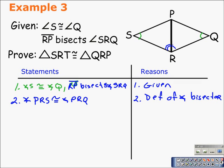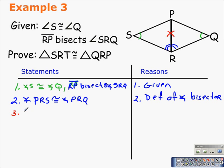Now, we're talking about angle-side-angle and angle-angle-side. We have two corresponding angles congruent. We would need to prove SR congruent to QR to use angle-side-angle, but there's no way to do that with this diagram. So what we're going to have to do is establish that PR is congruent to itself because of the reflexive property. PR is congruent to PR.